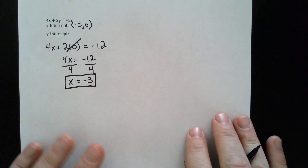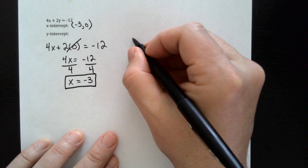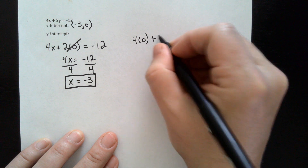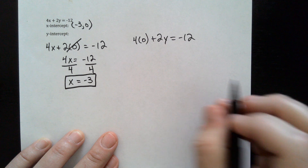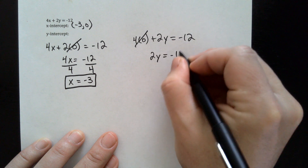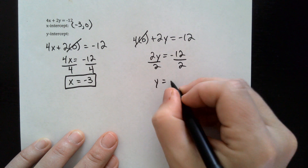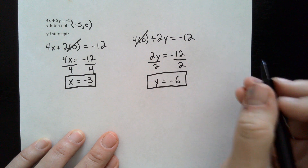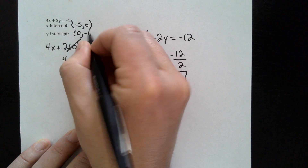Now let's find the y intercept by making the x term equal zero. So 4 times zero instead of x, plus 2y is equal to negative 12. So 2y is equal to negative 12. Dividing by two, I get y is equal to negative six. So that's my y intercept, and as an ordered pair it would be zero comma negative six.